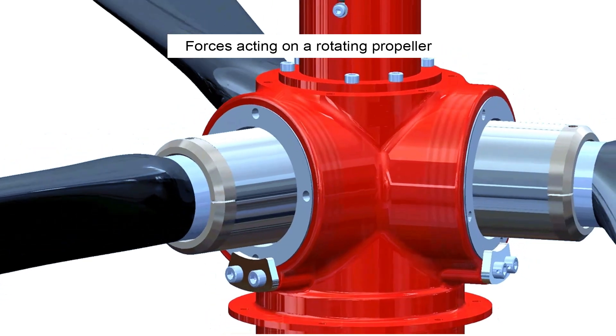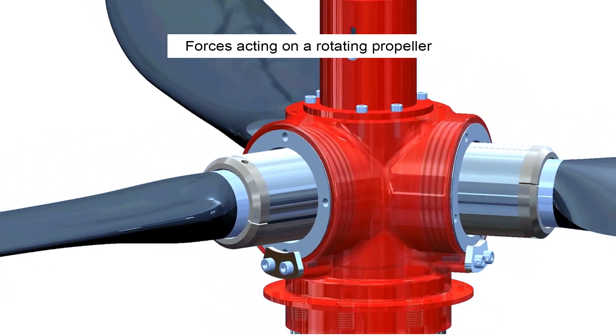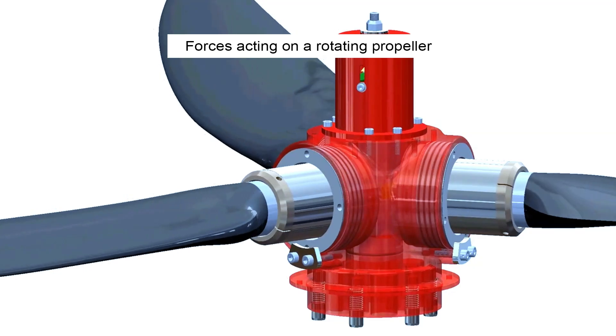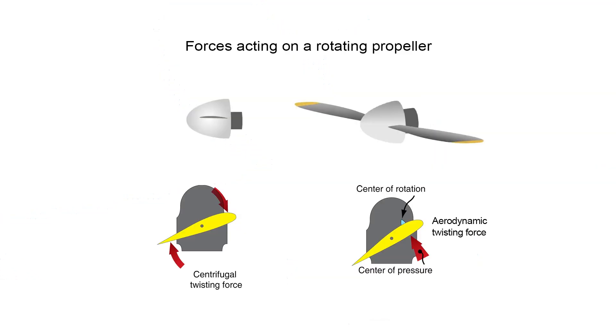At least two of these forces acting on the propeller's blades are used to move the blades on a controllable pitch propeller. Centrifugal twisting force is sometimes used to move the blades to the low pitch position, while aerodynamic twisting force is used to move the blades into high pitch. These forces can be the primary or secondary forces that move the blades to the new pitch position.